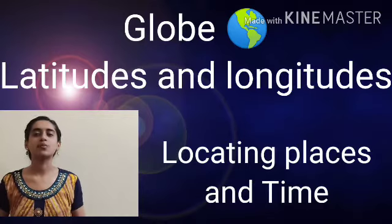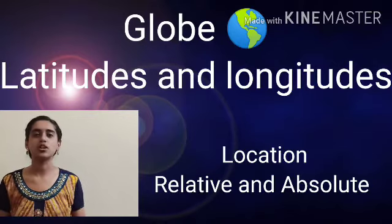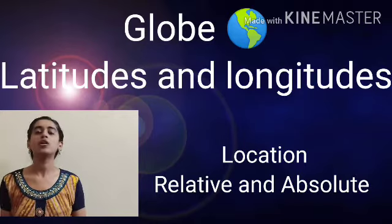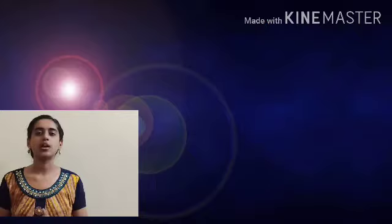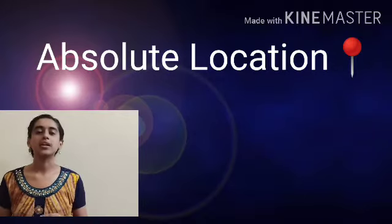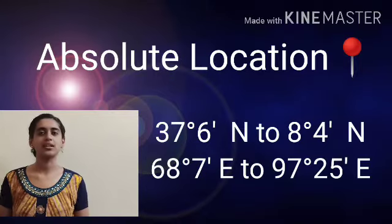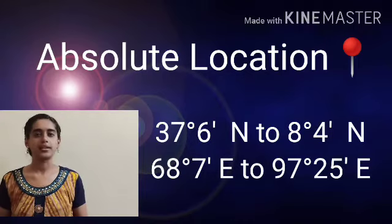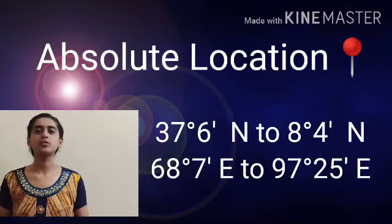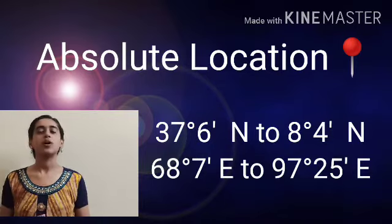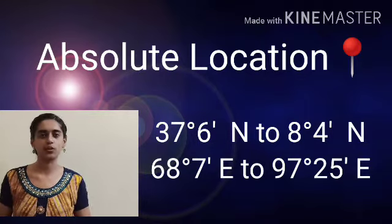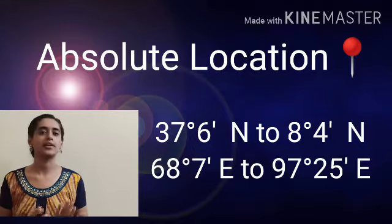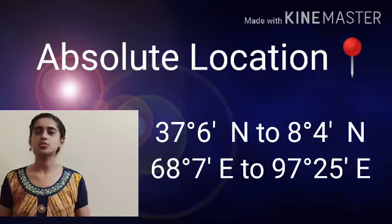And when we started discussing about location, we discussed about relative location — how we relate it to other landmarks or a direction. And in absolute location, how we tell a location of a place using the coordinates. For example, we have started seeing the coordinates of India: 37 degrees 6 minutes north to 8 degrees 4 minutes north, then 68 degrees 7 minutes east to 97 degrees 25 minutes east. We did latitude first and longitude next.